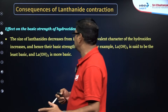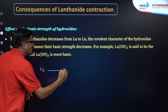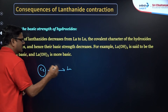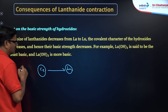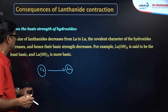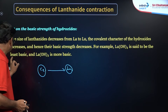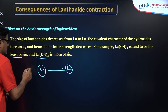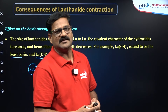Another effect is on the basic strength of hydroxides. From cerium to lutetium, atomic size decreases. Therefore, the basic strength of the corresponding hydroxides also decreases from cerium hydroxide to lutetium hydroxide. Lutetium hydroxide is said to be the least basic, and lanthanum hydroxide is said to be the most basic. This is one of the impacts of lanthanide contraction.